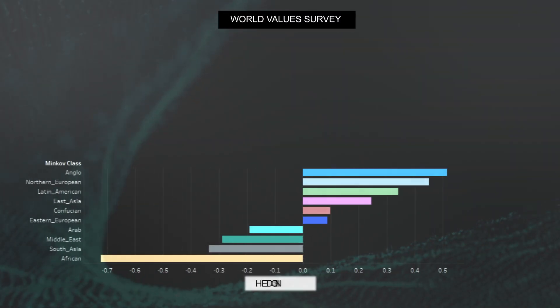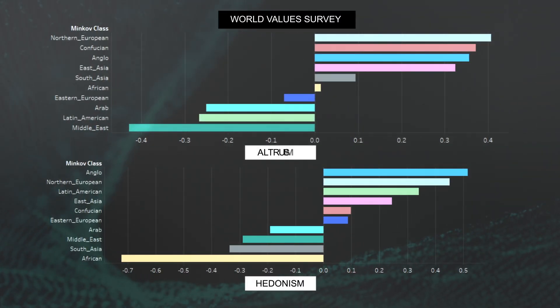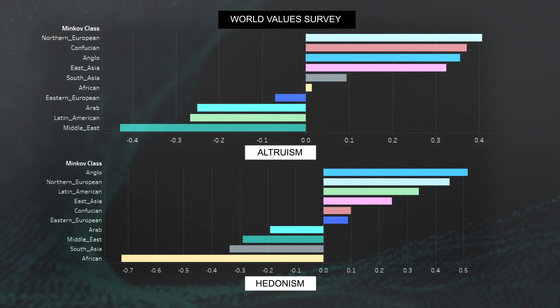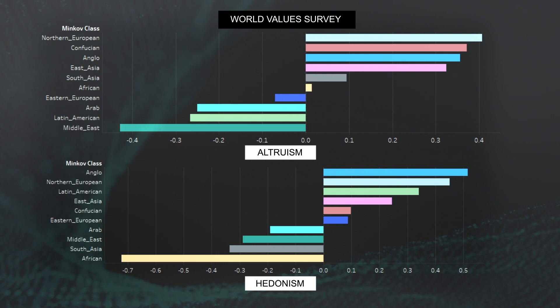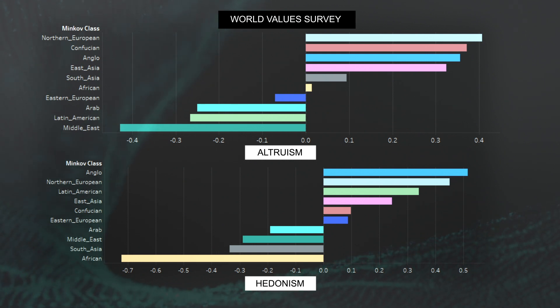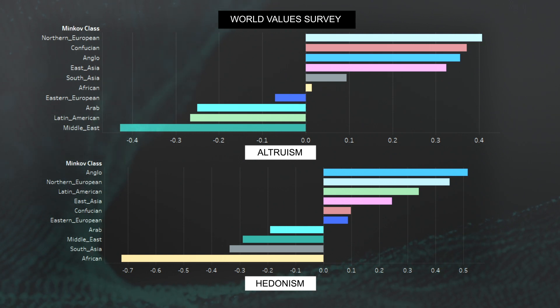If we have a look at this particular chart — one is hedonism, the other one is altruism — these are the average scores for several different cultural groups. And this is how the data are usually presented. We can see that those averages appear to be quite different from one another.